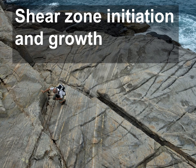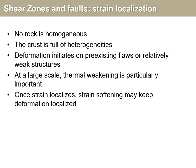So, shear zone initiation and growth. One important thing in this context is that no rock is homogeneous — there is always heterogeneity, some kind of flaws in the rock that are important for the initiation of shear zones, just as it is for fault initiation. Deformation initiates at some pre-existing flaws or relatively weak structures in general. At the large scale, we can have thermal weakening, local higher temperatures locally, or fluids being more present locally. Once strain localizes, strain softening may keep deformation localized so that you develop the shear zone.